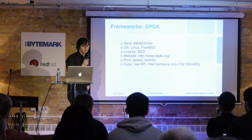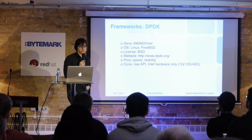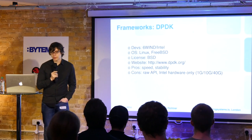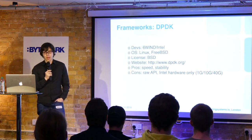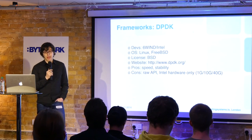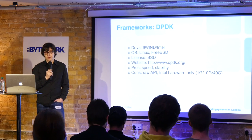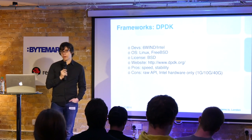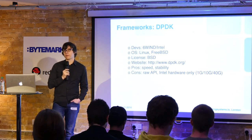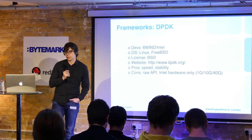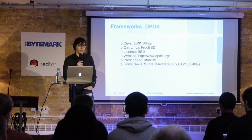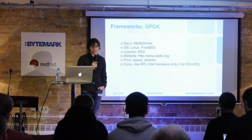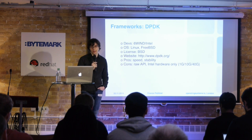On the framework side, there's DPDK — which anyone interested in this has likely heard of. It's primarily a 6WIND and Intel operation, runs on Linux and FreeBSD, is BSD licensed, and its speed is unmatched. It's a very stable, high-quality framework, but it's low level — you have to implement load balancing and general packet processing yourself. Another drawback is that it's only Intel hardware, though Intel now has 40G cards.